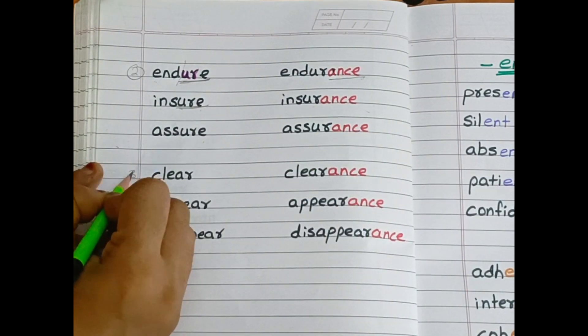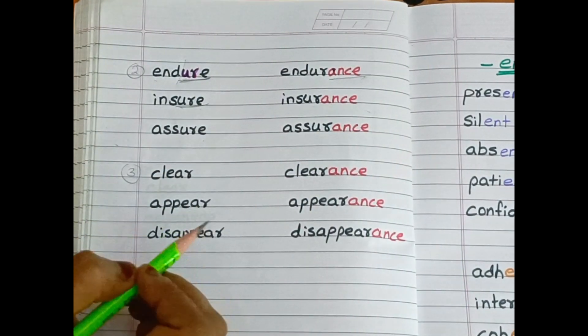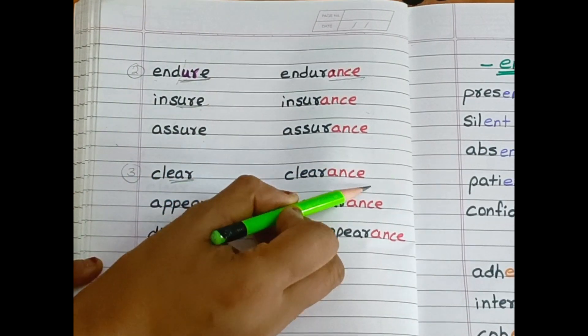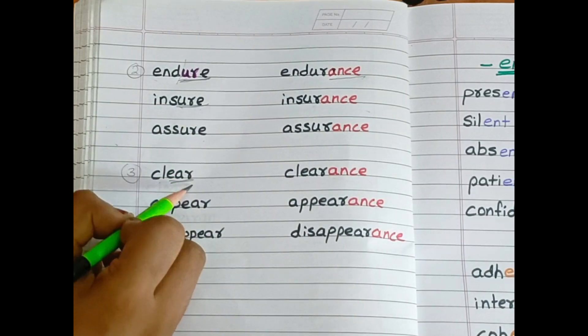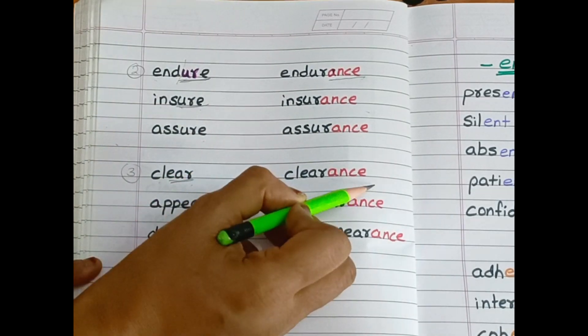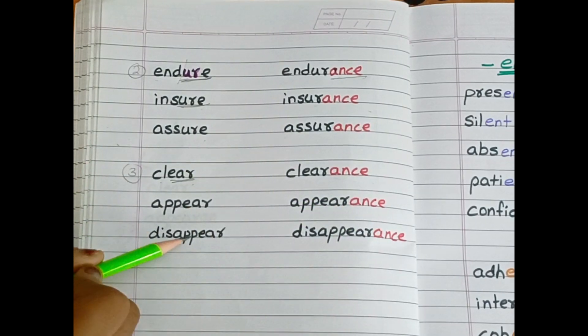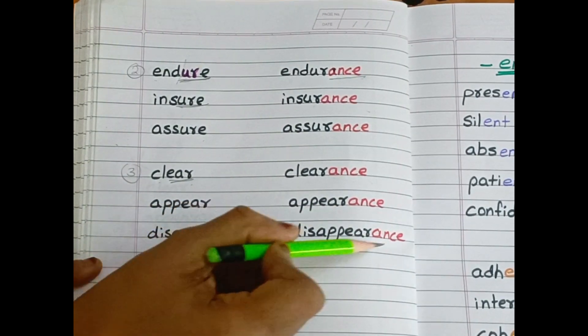And the third rule is, if the word ends with e-a-r, add a-n-c-e. Clear—clearance. Appear—appearance. Disappear—disappearance.